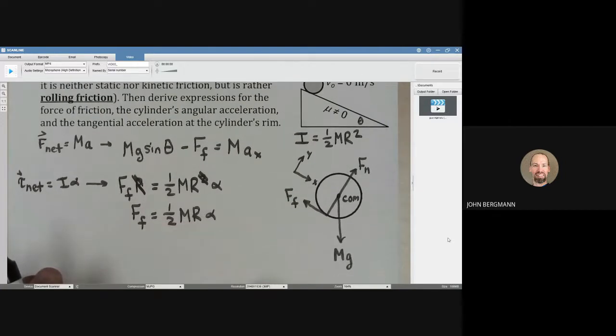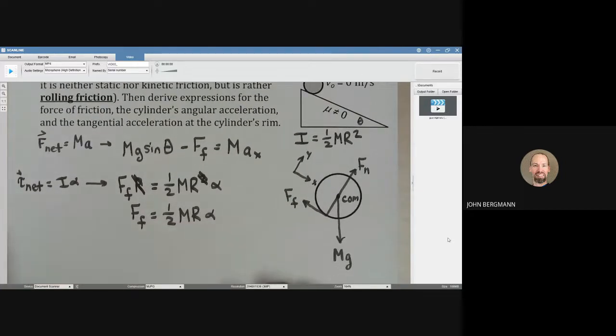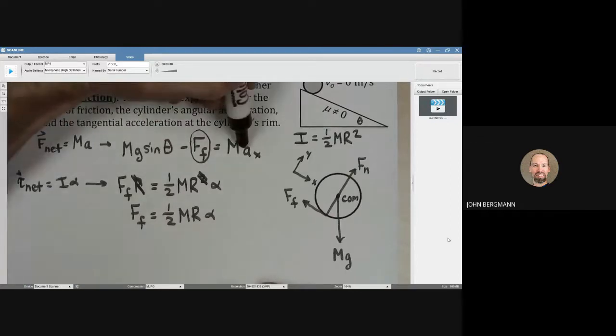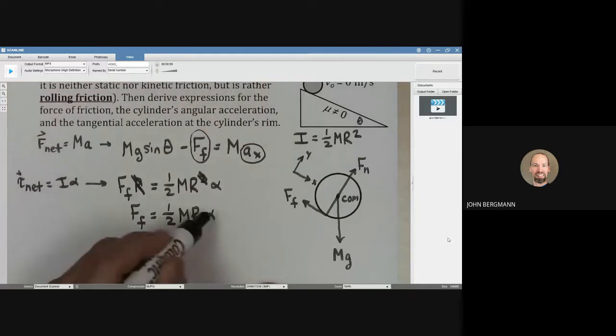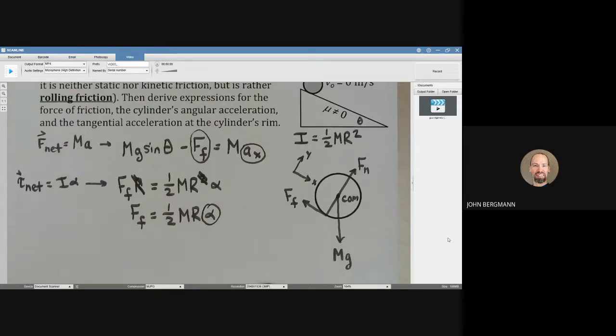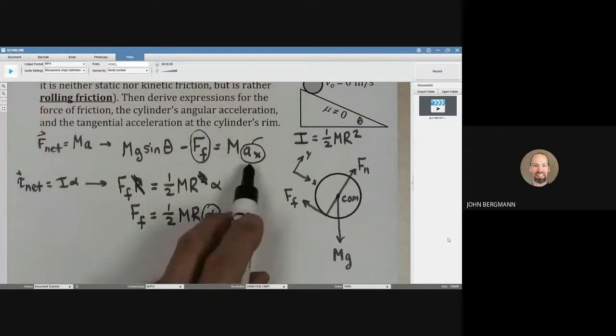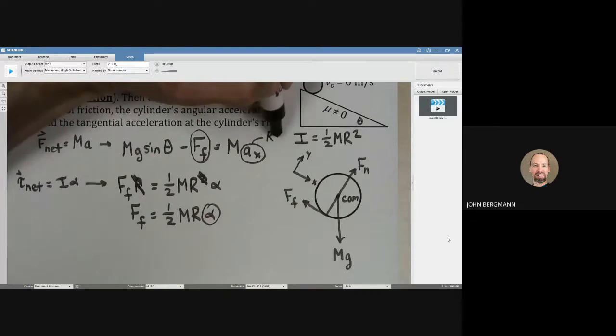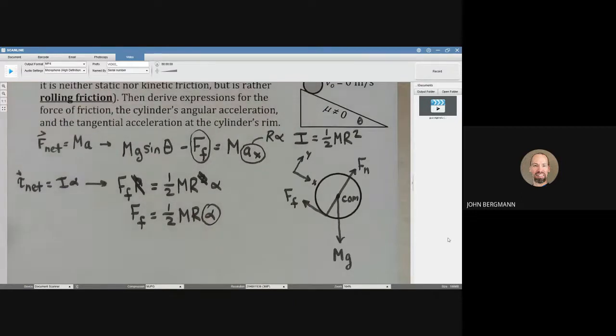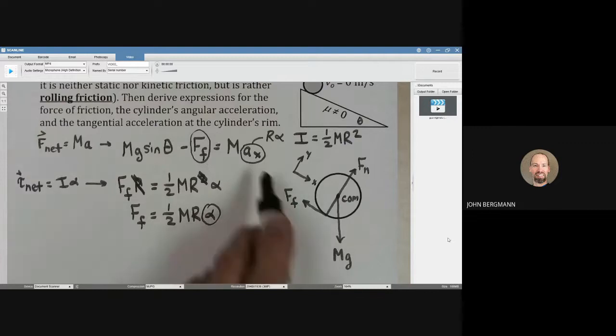Finally, we need to use the bridge equation. What don't we know here? We don't know the force of friction, the acceleration, or alpha. That's a problem because right now we have three unknowns but only two equations. The third equation is that bridge equation: the tangential quantity equals r times the angular quantity. There's the third equation right there.